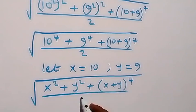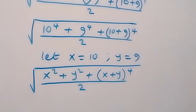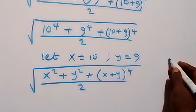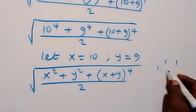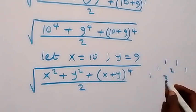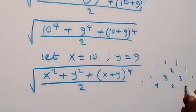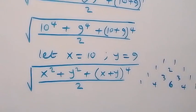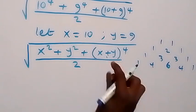Then all divided by 2. From here we can expand the bracket (x plus y) raised to power 4. From Pascal's triangle: power 1 gives 1 1, power 2 gives 1 2 1, power 3 gives 1 3 3 1, power 4 gives 1 4 6 4 1 as the coefficients. So now we will expand this bracket.